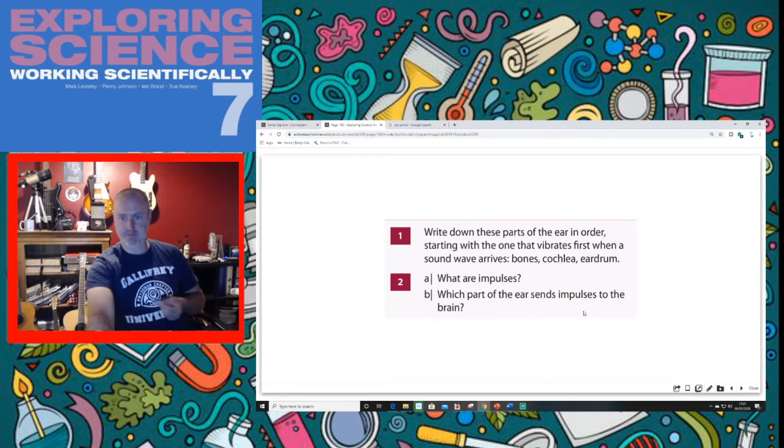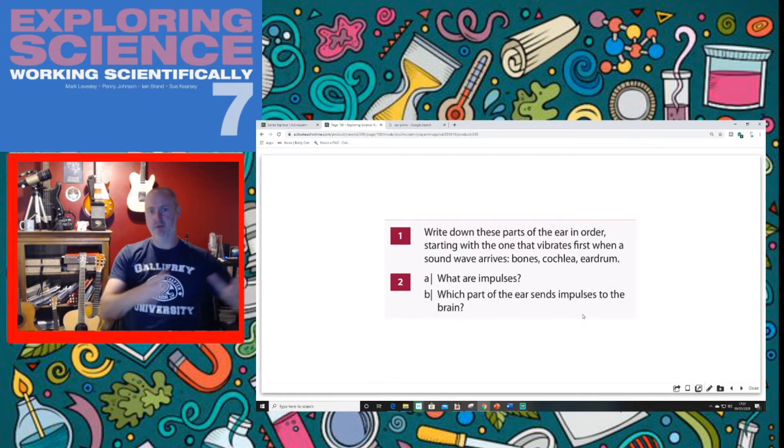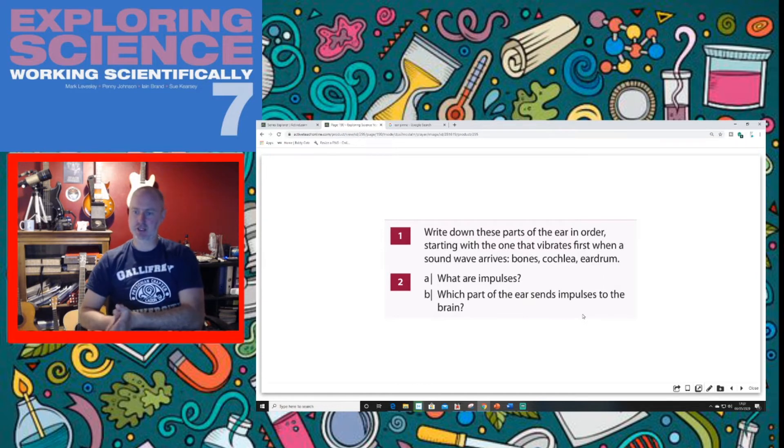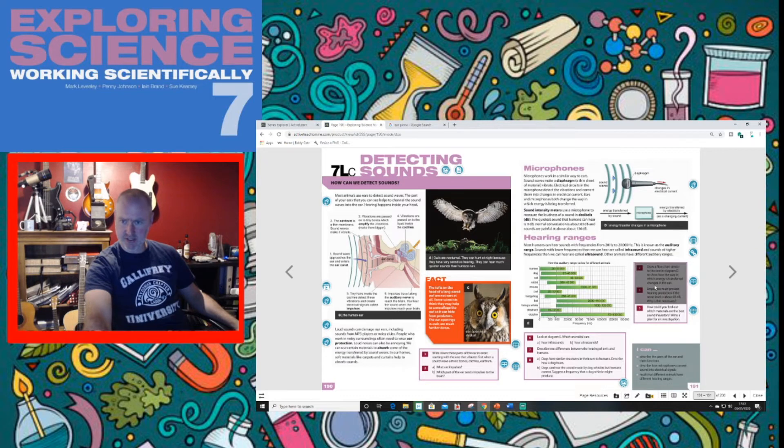And B, which part of the ear sends the impulses to the brain? Well, the impulses are generated in the cochlea, but they travel down the auditory nerve. So is there anything that's going to catch us out on any of the other questions? Let's have a look.